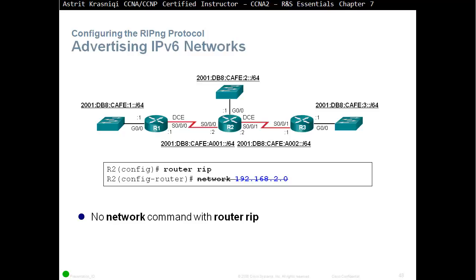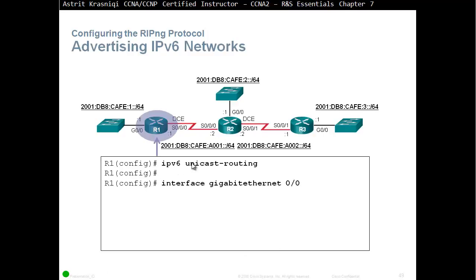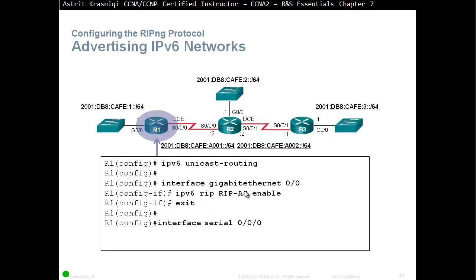In IPv6 RIP-NG, configuration is different — there's no network command. Instead, you must enable RIP on each individual interface. First, enable IPv6 unicast routing globally with 'ipv6 unicast-routing' in global configuration mode. Then go to each interface, for example interface GigabitEthernet 0/0, and type 'ipv6 rip RIP-AS enable', where RIP-AS is the chosen RIP domain name. Repeat this on each interface where RIP-NG should run.